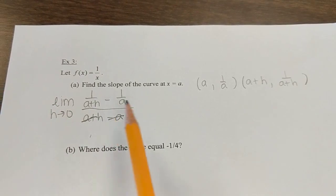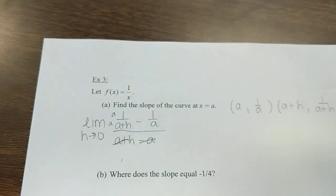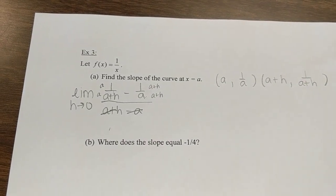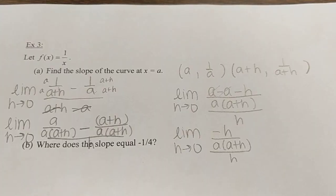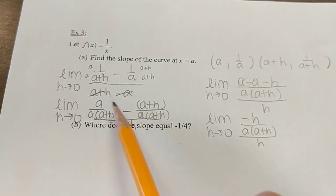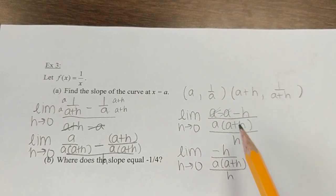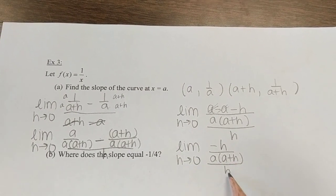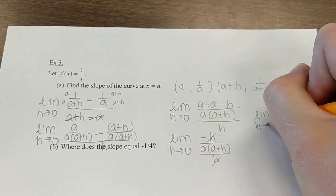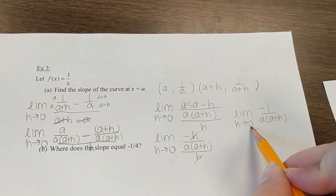On the top, in order to simplify this, I have to use some common denominators. This one I need to multiply by a over a, and this one I need to multiply by a plus h over a plus h. When I write it out, and then I actually do this subtraction, a minus a plus h, I get a minus a minus h. These a's cancel out. I'm left with negative h over a times a plus h, all over h. These h's end up canceling out. Now I end up with limit as h goes to 0 of negative 1 over a times (a plus h).